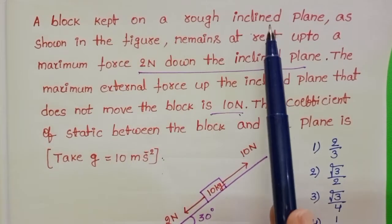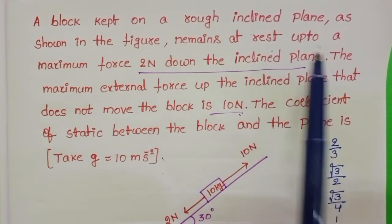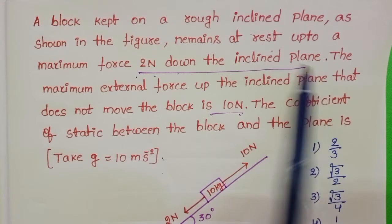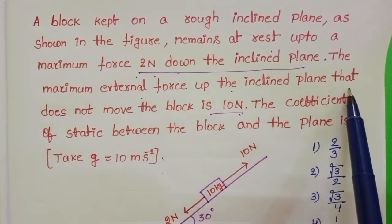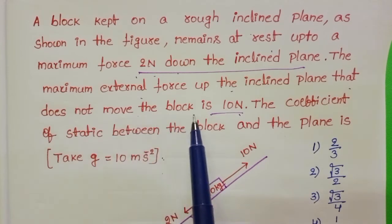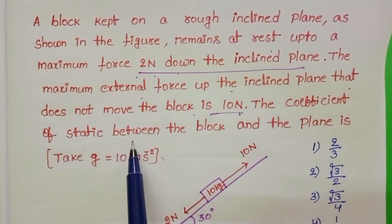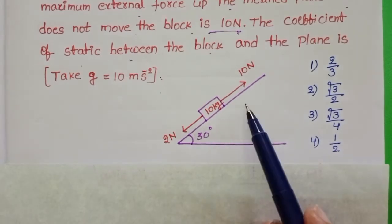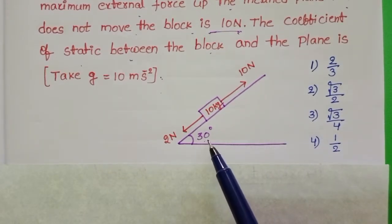A block kept on a rough inclined plane as shown in the figure remains at rest up to a maximum force of 2 newtons down the inclined plane. The maximum external force up the inclined plane that does not move the block is 10 newtons. We need to find the coefficient of static friction between the block and the plane. The angle of inclination is 30 degrees.